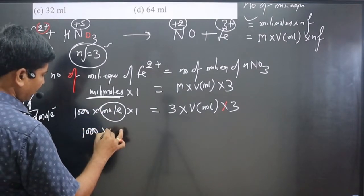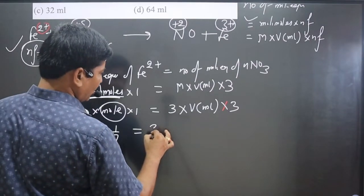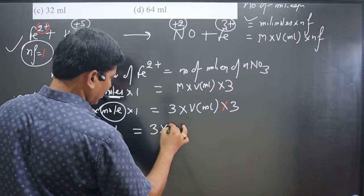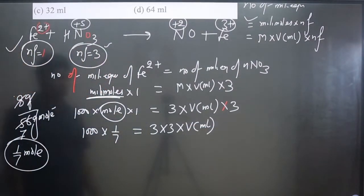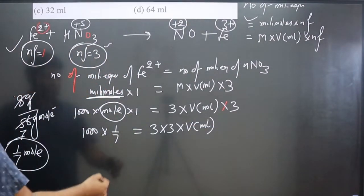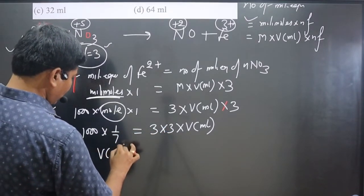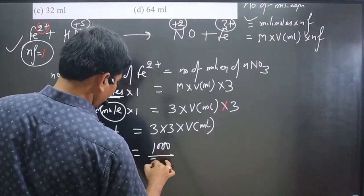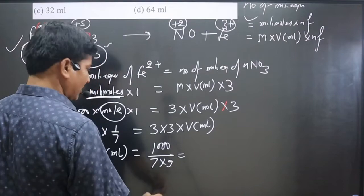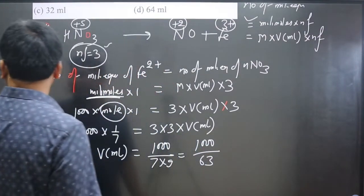So 1000 multiplied by 1 upon 7, this is 1, so leave it, equals 3 multiplied by 3, equals volume in mL. Simplify: 3, 3 will cancel, this is 3 divided by 9, so volume in mL will be equal to 1000 divided by 7 multiplied by 9. 7 times 9 is 63, so 1000 divided by 63.